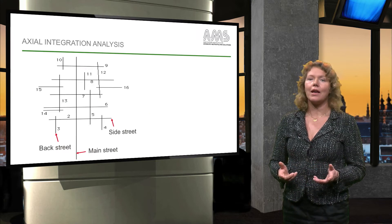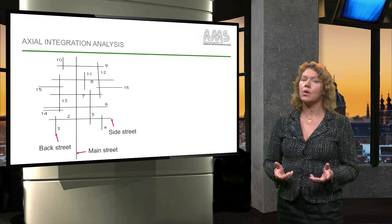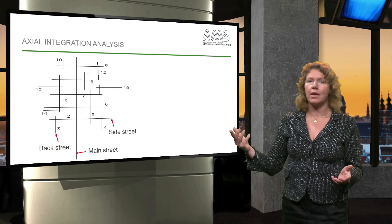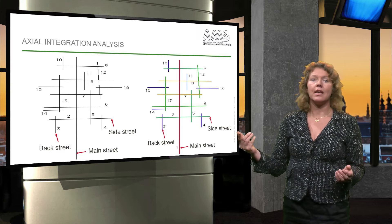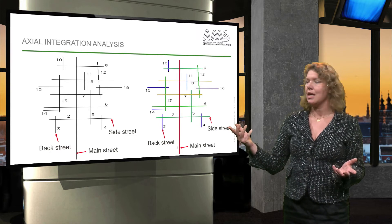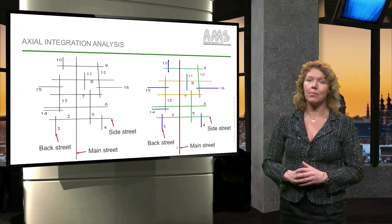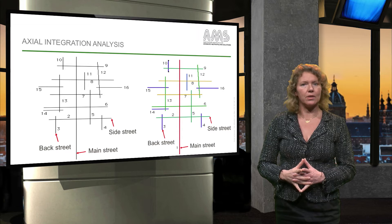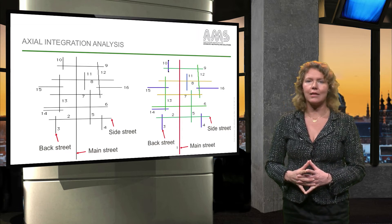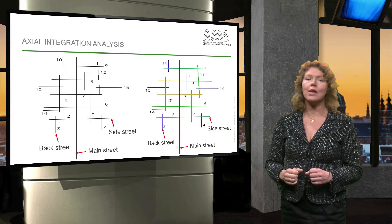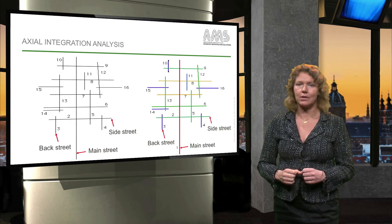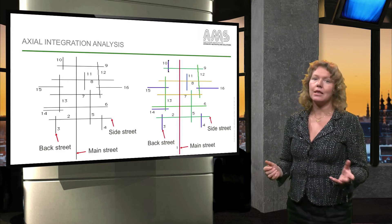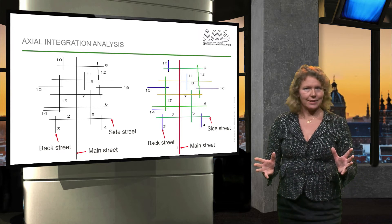In order to analyse the city, we start with the actual map. You can process this map through software. This software provides a set of colour codes. Behind these colour codes there are hidden numbers, which represent different levels of integration. The red areas are the most integrated and the blue the most segregated — so the red ones are the most accessible streets and the blue ones are the least accessible streets.